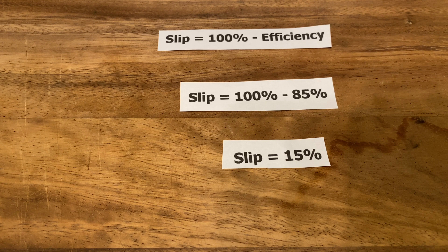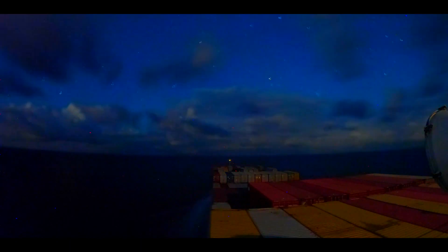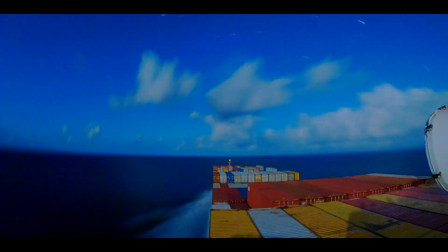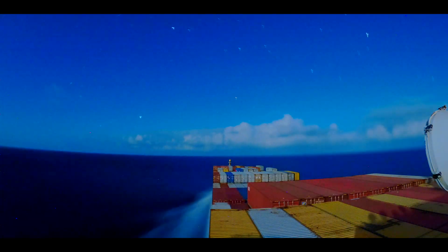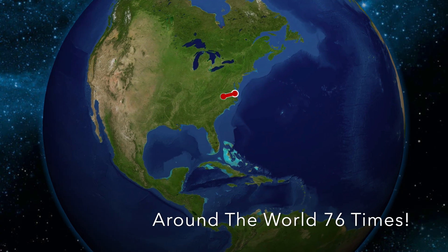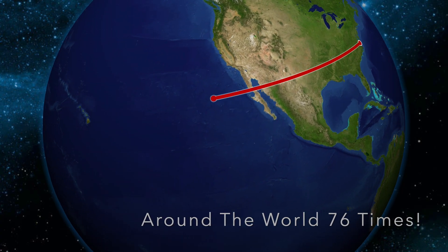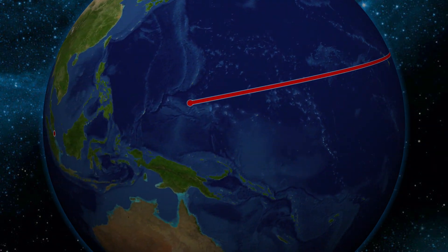We can also use these same formulas to know our SLIP over any period of time. Typically, this is reported for every 24 hours underway. The Marisk Ohio was built in 2006, and this video was recorded at the beginning of 2020. It's pretty amazing to see that it has traveled 1,648,275 nautical miles in 14 years — that's the equivalence to sailing all the way around the world more than 76 times, or traveling to the moon almost eight times.